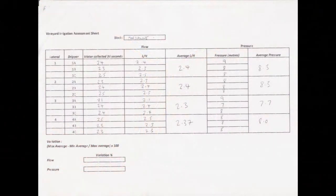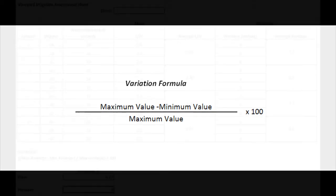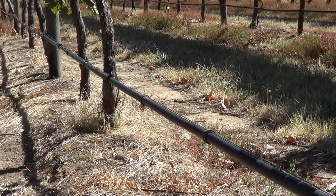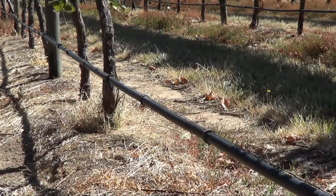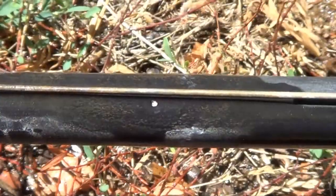Take the average of each lateral to get four figures for flow and four figures for pressure. We then assess the variation through this formula — it's easiest to do this on a spreadsheet. As we can see in this case, the variation of flow is 4.17%, which is a very good result. 10% flow variation, or plus or minus 5% of the nominal flow rate, is considered acceptable for vineyards.